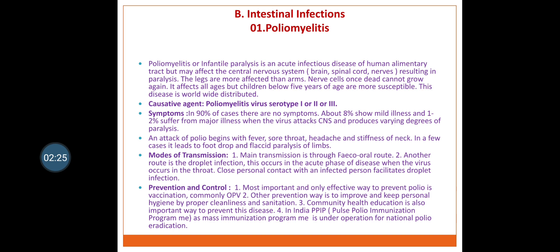Symptoms of polio: in 90% of cases there are no symptoms. About 8% show mild illness and 1–2% suffer from major illness when the virus attacks the CNS and produces degrees of paralysis. An attack of polio begins with fever, sore throat, headache, stiffness of neck. In few cases it leads to foot drop and flaccid paralysis of limbs. Mode of transmission: the main transmission is through facio-oral route. Another route is droplet infection, which occurs in the acute phase of disease when the virus occurs in the throat.